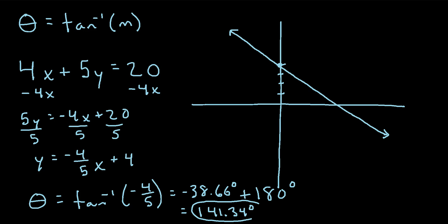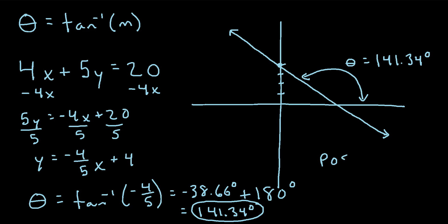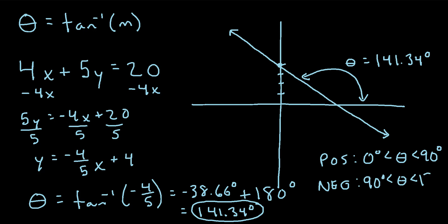So 141.34 degrees is the angle of inclination of this line. I've drawn the line on a graph — the angle between the line and the x-axis is 141.34 degrees. One last thing to mention: if you have a line with a positive slope, the angle of inclination will always be between 0 and 90 degrees. If you have a line with a negative slope, the angle of inclination will always be between 90 and 180 degrees.